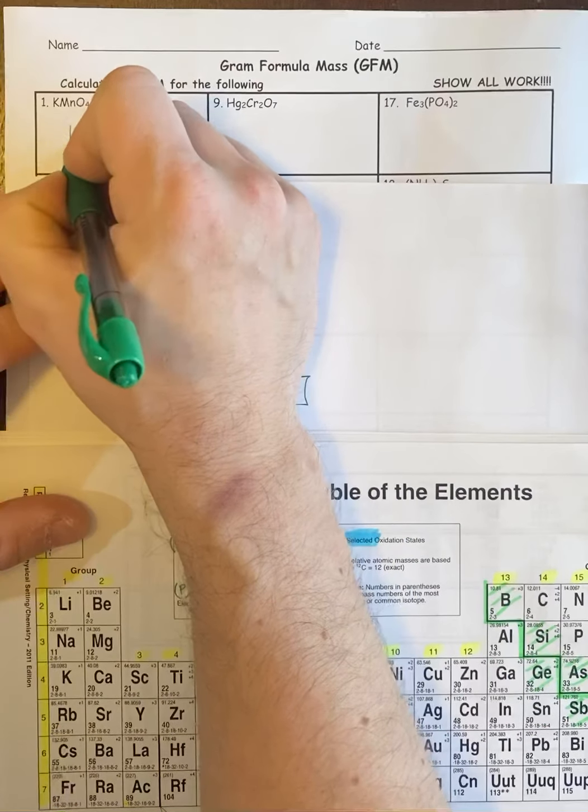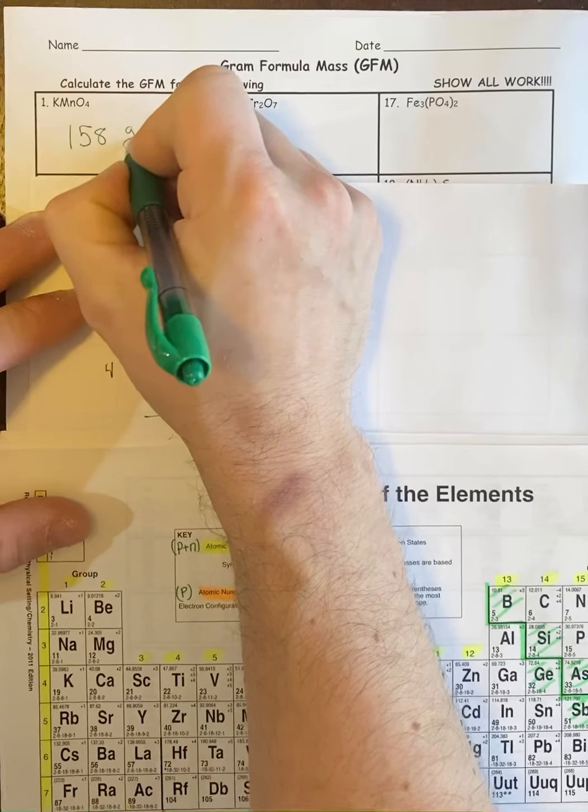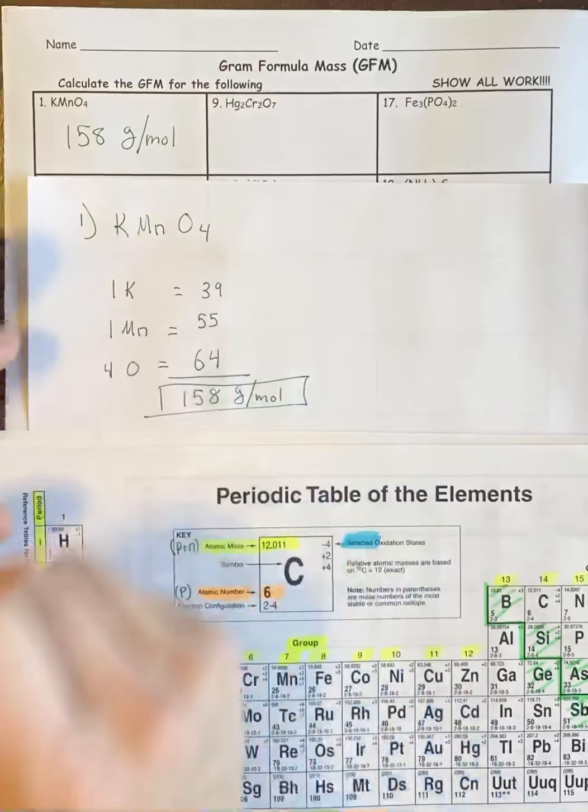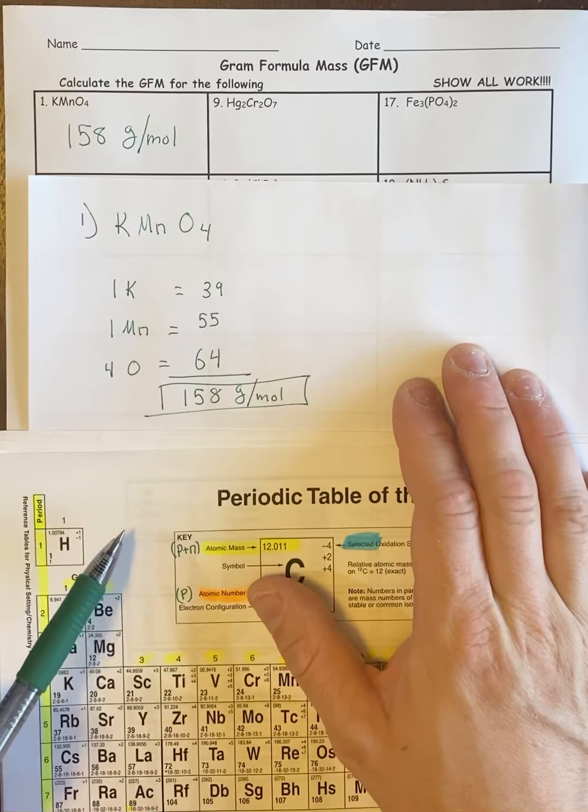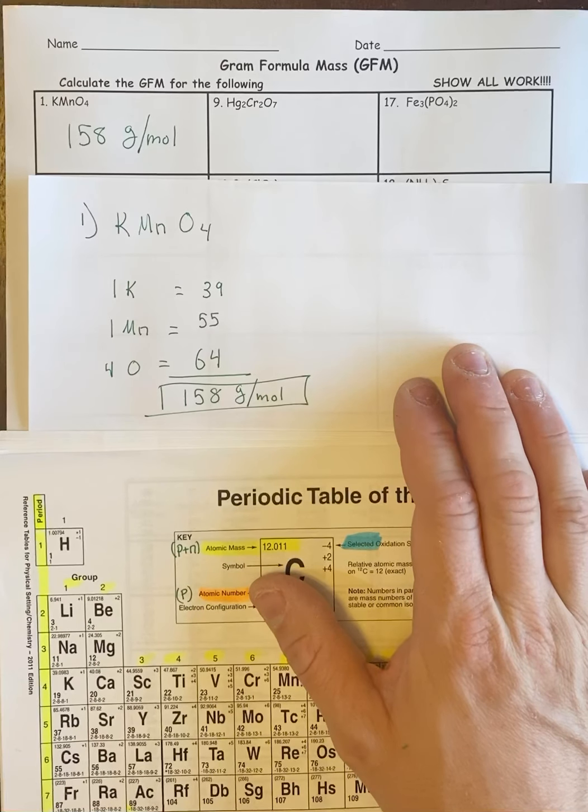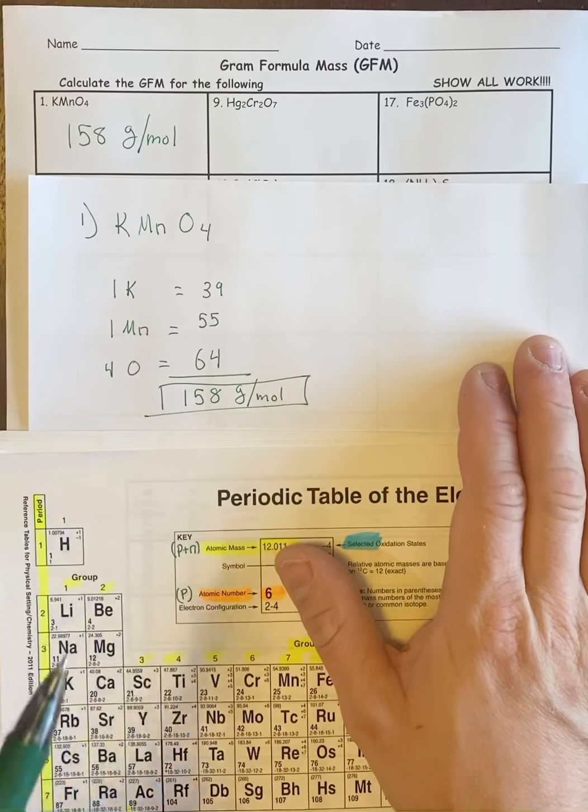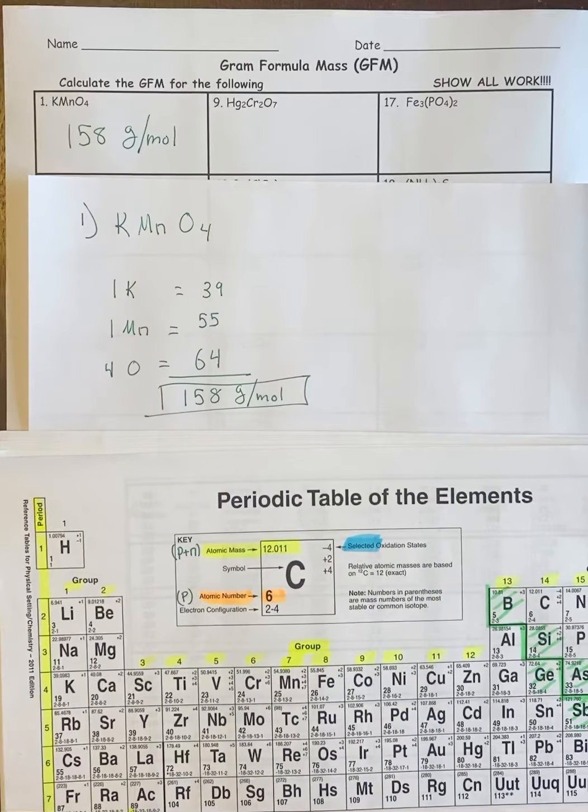So then you're going to take your answer and write 158 grams per mole. This work, just like I'm doing it here, is going to be attached to your worksheet and then to the back of it. And then you're going to show me all the work. If you need more than one page, you need more than one page.